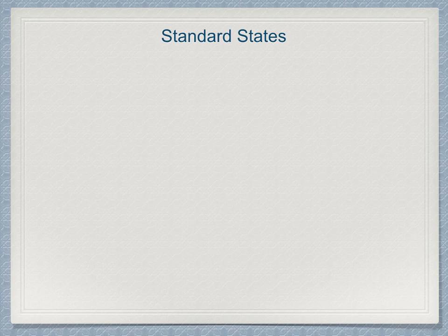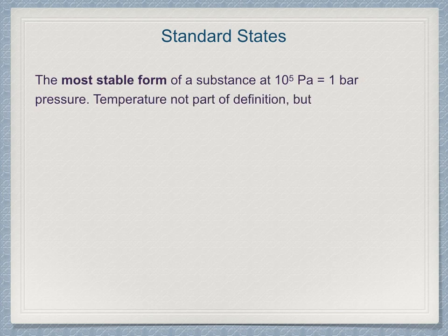Things do, however, depend upon temperature, so it must be specified, but we can find a standard state for a substance at any and all temperatures. Most commonly, the temperature of 298.15 Kelvin or 25 degrees Celsius is the temperature used for most tables. A substance's reference state is its most stable form at a pressure of 10^5 pascals, or 1 bar.